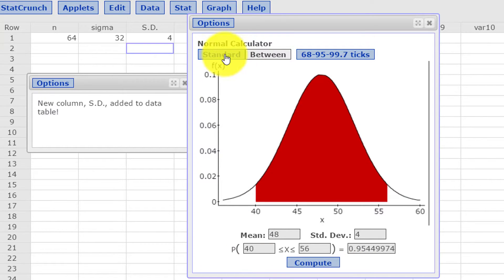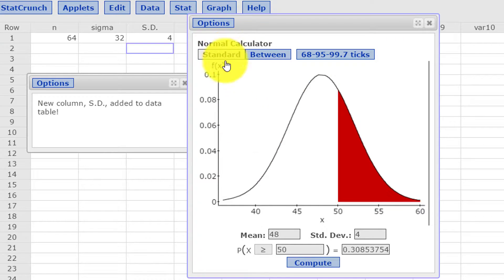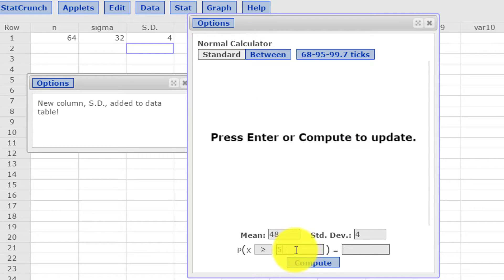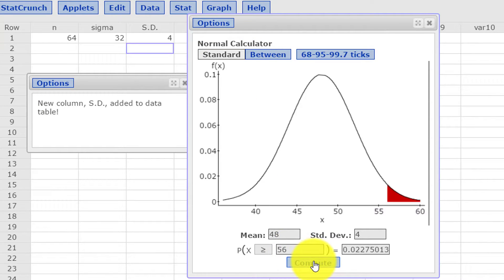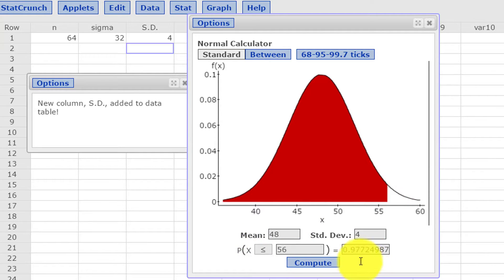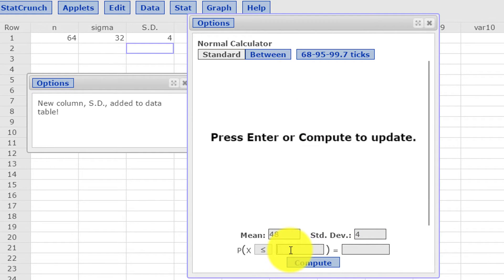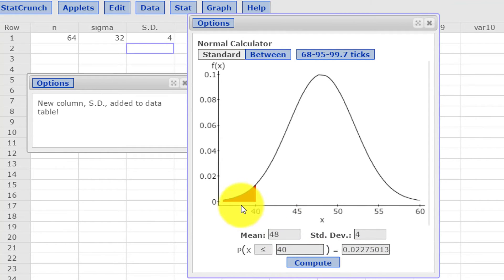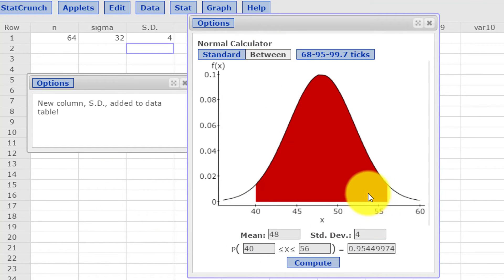You could have done this using the standard. You know, we can put in 56. I want to use the left-hand side. 56 is 0.977 and 40 is 0.023. So you can subtract the 0.023 from the 977 to get your answer. But I like to use the between because it just does it so much faster. So I hope this helps.